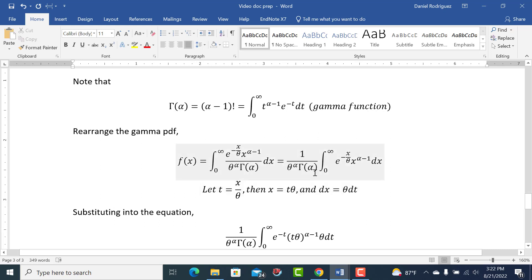So we take, we say let t, because we have a t here, and there's a t raised, e raised to the t, or Euler's number raised to t, so we have x over theta, so we let t equals x over theta, then we solve for x, x equals t theta.